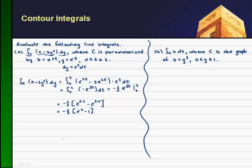That was pretty straightforward. So in part b, we have the contour integral of x ds, where c is the graph of x equals y cubed, and y varies between 0 and 1.